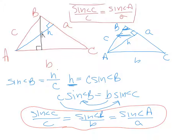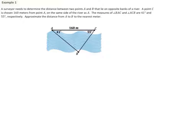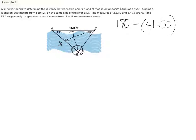Let's use the Law of Sines to find some unknown measurements. A surveyor needs to determine the distance between two points A and B on opposite banks of a river. A point C is chosen 160 meters from point A on the same side of the river. The measures of angles BAC and ACB are 41 and 55 degrees respectively. We're trying to find the distance from A to B. We know the angles add to 180, so 180 minus (41 + 55) equals 84 degrees.